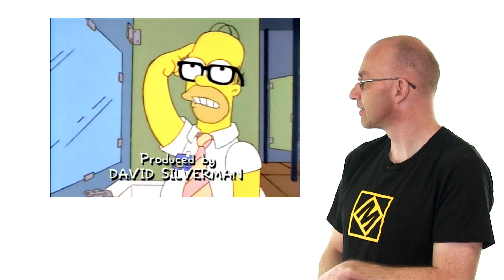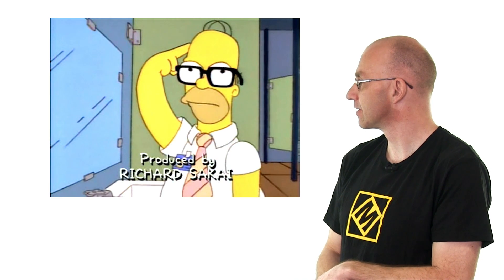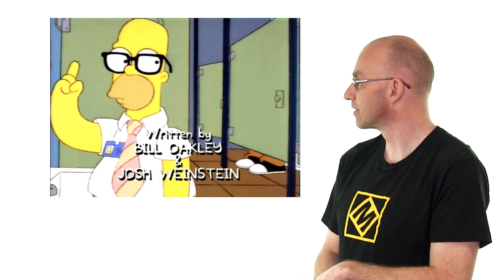The sum of the square roots of any two sides of an isosceles triangle is equal to the square root of the remaining side. That's a right triangle, you idiot!